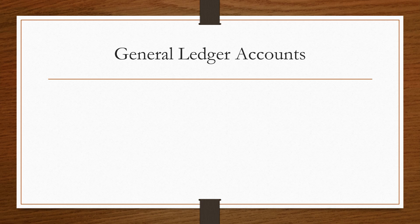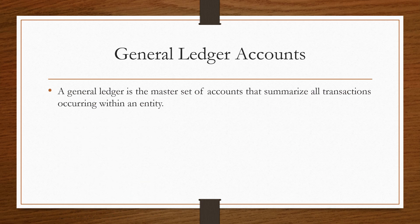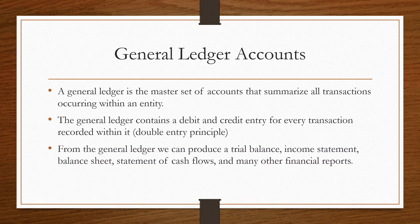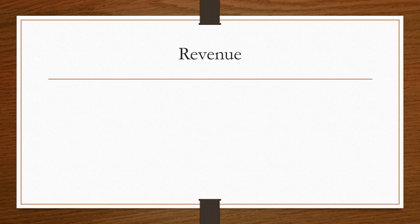The next terminology we are going to go through is called the general ledger. The general ledger is the master set of accounts that summarizes all transactions occurring within an entity. It contains a debit and credit entry for every transaction recorded within it — that's the double entry principle. From the general ledger we can produce a trial balance, income statement, balance sheet, statement of cash flows, and many other financial reports.